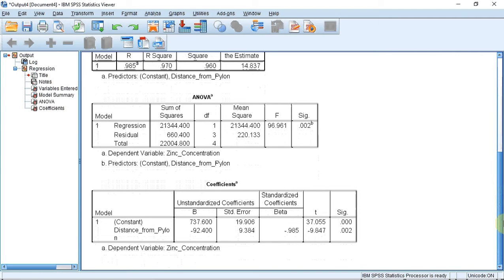As you can see under column B, it gives us our intercept value, 737.6 first, followed by our slope, minus 92.4 second. We can now use these to construct our equation.